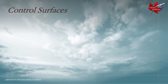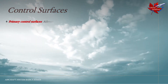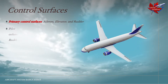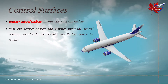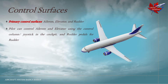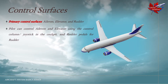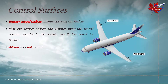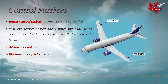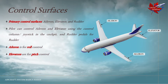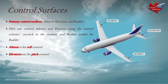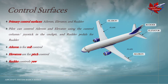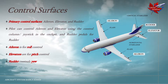Let us talk about control surfaces for the airplane. The primary control surfaces are the aileron, elevator, and rudder. The pilot can control aileron and elevator using the control column or joystick in the cockpit, and rudder pedals for the rudder. Aileron is for roll control and is situated on the wings of the airplane. Elevator is for pitch control and situated on the horizontal stabilizer of the airplane. The rudder controls yaw and is situated on the vertical stabilizer of the airplane.